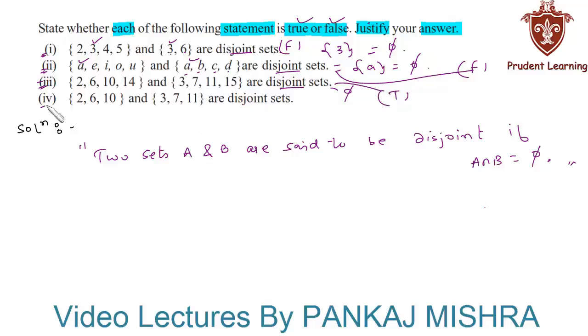Now let us see the last section. Here also we can see that the given two sets have no element common to each other. Therefore, the intersection is a null set, and hence we can say that they are disjoint. So the given statement is also true. This completes our solution.